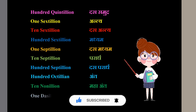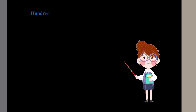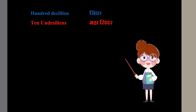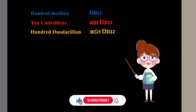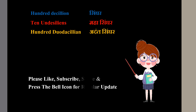1 decillion means Shisht. 100 decillion means Singh. 10 undecillion means Maha Singh. Thank you for watching this video, please like, subscribe, and share.